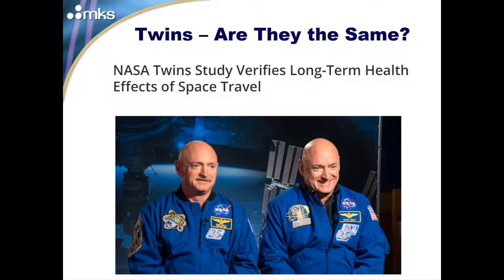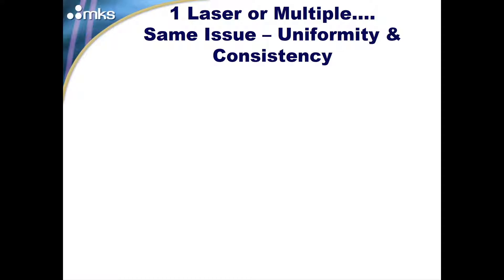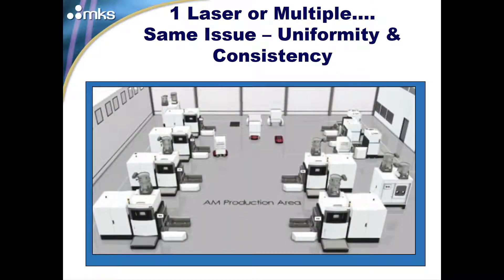Some of the measurements they were taking were not valid as a result of that. So with lasers, whether you have one or multiple, it's the same issue: uniformity and consistency. This is an example of an operation where multiple lasers are in a particular area, all making the same product, and certainly the demand has to be where everyone is making the same level of quality specification. Any tolerance and variance between those is not acceptable.